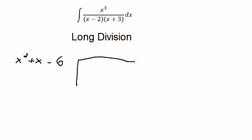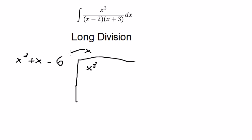We divide x to the power of 3. So we put x in here, then we multiply with this one. And you got about x to the power of 3 plus x squared minus 6x.